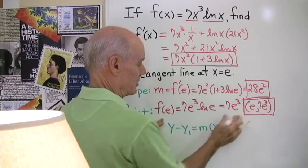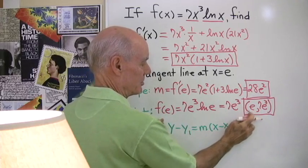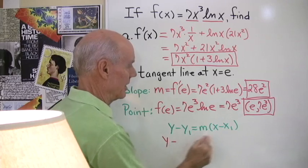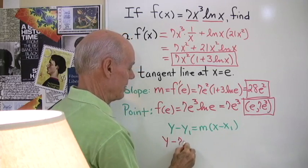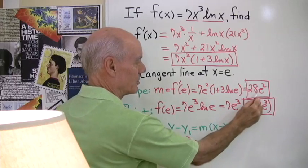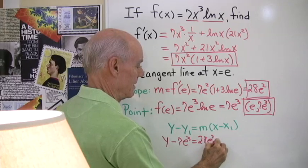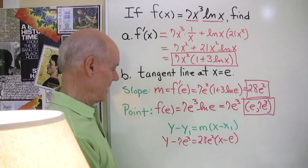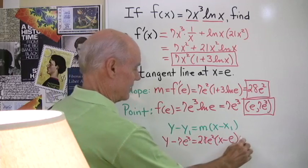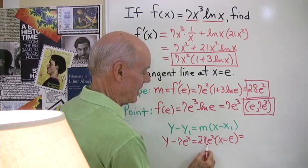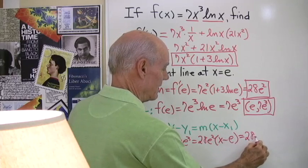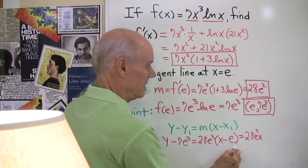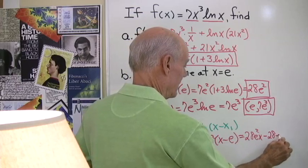Here I have the slope of the line. I substitute this in for m. I substitute this in for x₁ and this for y₁ and I'll have the equation of that line. So y - y₁ 7e³ equals m which is 28e² times x - x₁ which is e. Okay? And then I'll multiply that out. Let's see. 28e² times x is 28e²x and then 28e² times e is going to be minus 28e³.